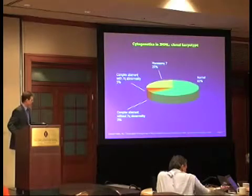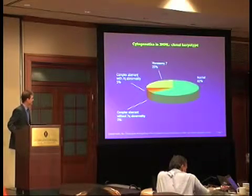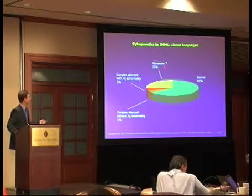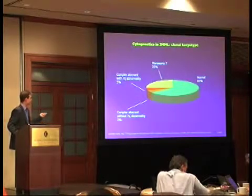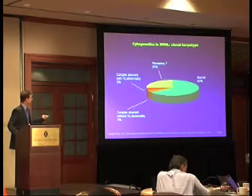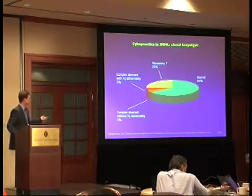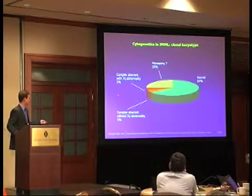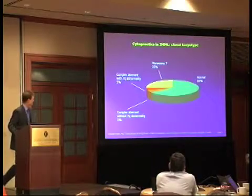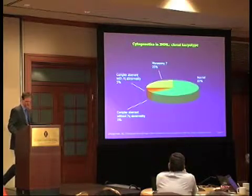Here's the cytogenetics. Cytogenetics tests will come back normal in the majority of cases. Monosomy 7 without concurrent abnormalities is the second most frequent finding. And then in a minority of cases, you may have a complex, burned karyotype with or without a 7q abnormality.